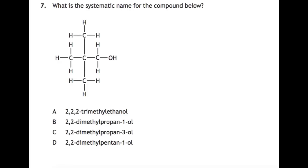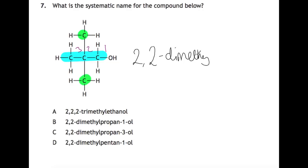What is the systematic name for the compound below? The best way is to look at the structure and name it without looking at the options. Look for the longest chain of carbons — we have 3 here. Number them from the end closest to the functional group: 1, 2, 3. We've got two methyl groups both attached at carbon 2, giving 2,2-dimethyl. We've got 3 carbons so it's propan-, and our OH is on carbon 1, so it's 2,2-dimethylpropan-1-ol. This leads us to answer B.